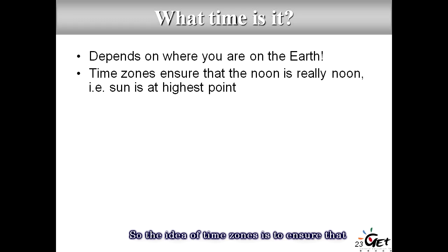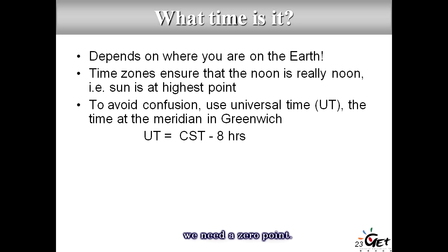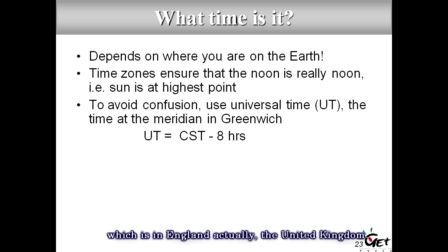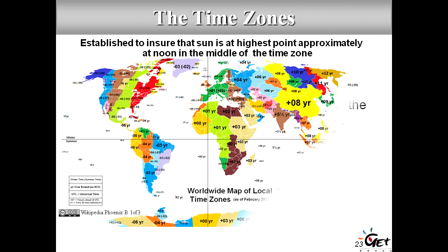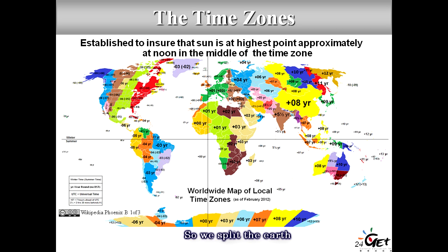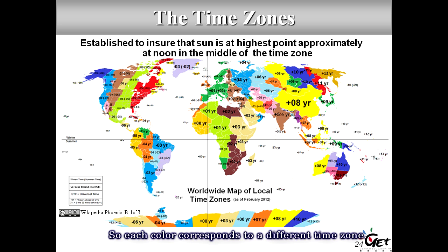The idea behind time zones is to ensure that noon is really noon — that the Sun is at the top of the sky. To avoid confusion we need a zero point: Universal Time (UT), which is the time at the Greenwich Meridian in England. We split the Earth into different time zones, from minus 12 to plus 12. For example, Taiwan's universal time is Taiwan local time minus eight hours.